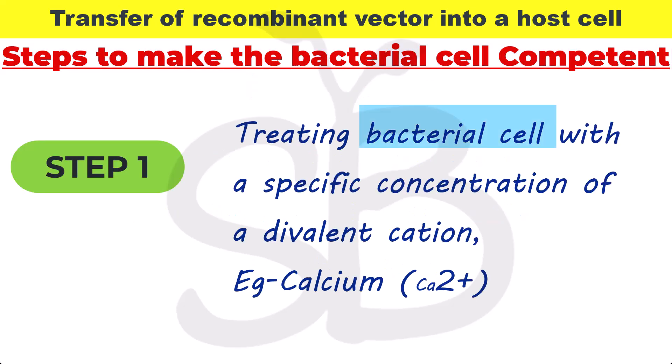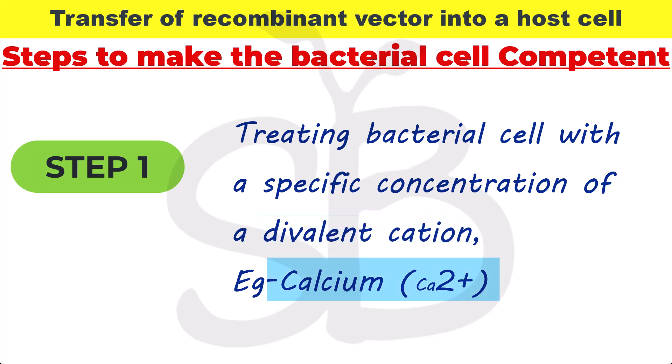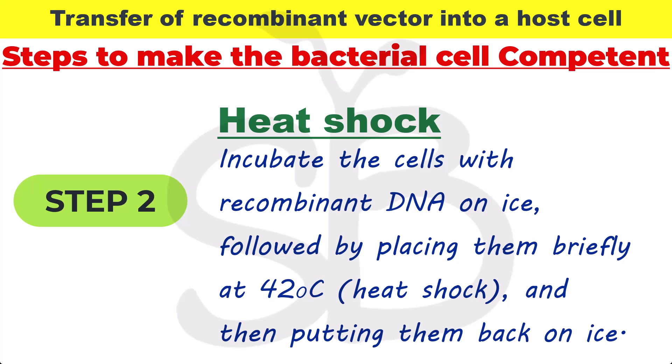This is done using a divalent cation — specifically calcium ions, Ca2+. When the bacterial cell is treated with calcium ions, it creates small pores in the cell, making the DNA uptake process more efficient and effective.